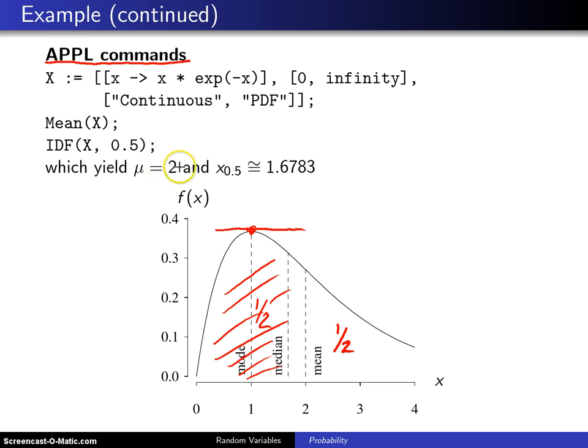Finally, the population mean can be interpreted as a balance point, and in this case you get 2. So this is an example where the mode, median, and mean - the three measures of central tendency - are all different.